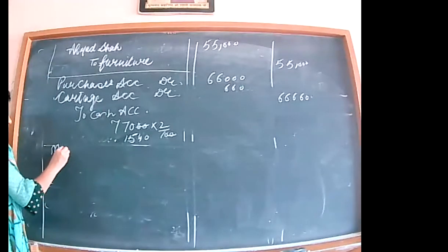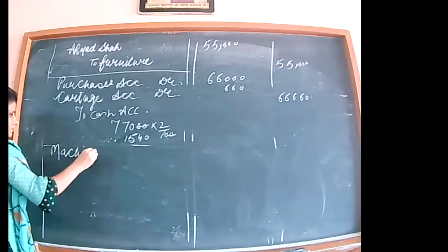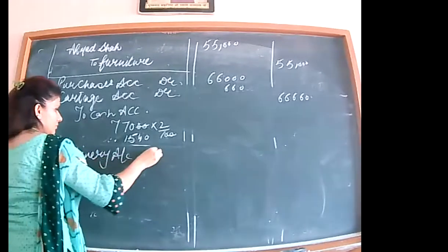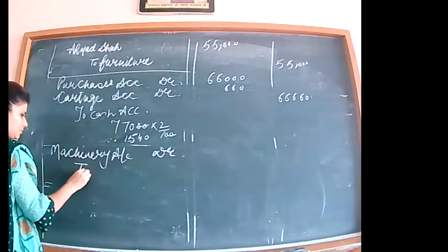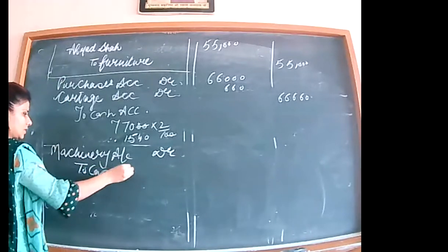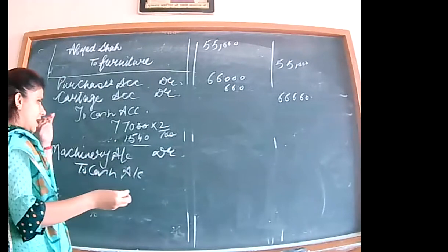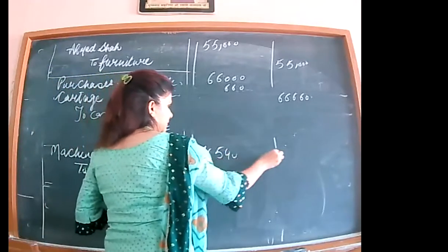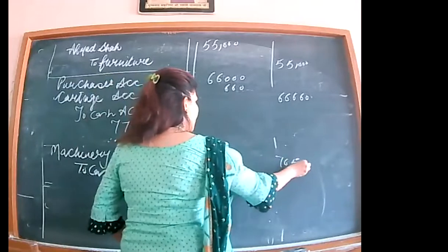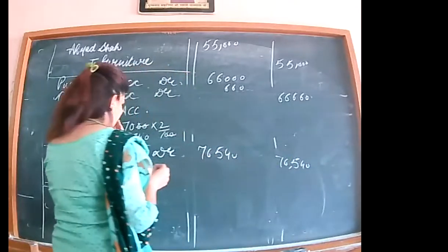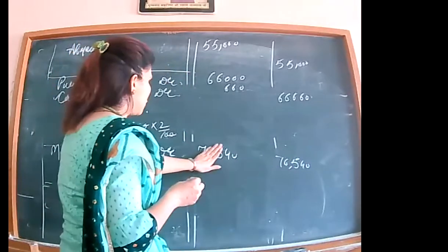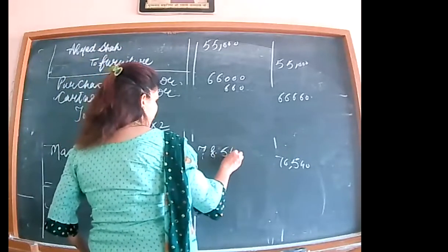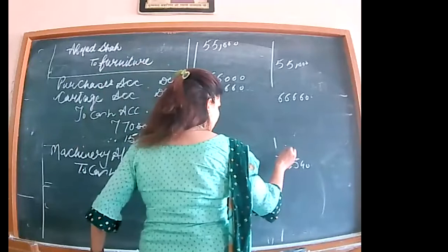Machinery account debit to cash. Total cost of machinery: Rs. 77,000 + Rs. 1,540 = Rs. 78,540. Entry: machinery account debited to cash — Rs. 78,540.